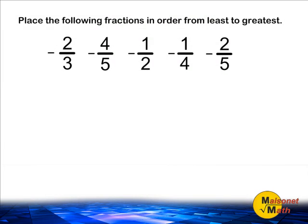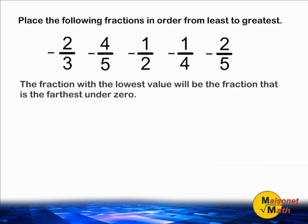We have five negative fractions that we have to order from least to greatest. The fraction with the smallest value will be the one that is the farthest underneath zero, because the further underneath zero something is, the lower the value. Because all of the fractions are negative, we know that the values are going to be less than zero, but we know the values do not go as far down as negative one. So all five of these values must fall somewhere in between zero and negative one.